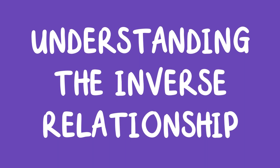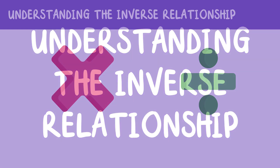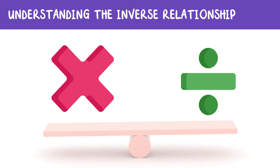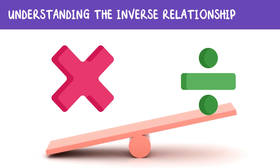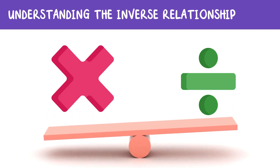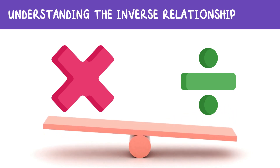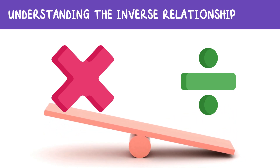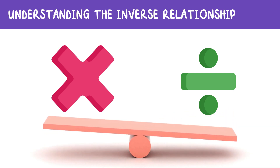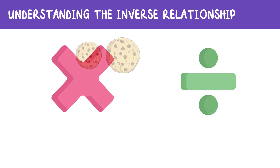Next, we'll examine the inverse relationship between multiplication and division. Multiplication and division are like best friends — they're inverse operations. That means they undo each other. When you multiply, you're putting things together. When you divide, you're splitting things apart.